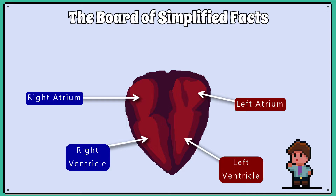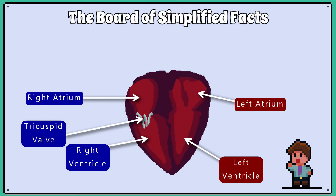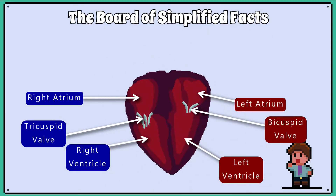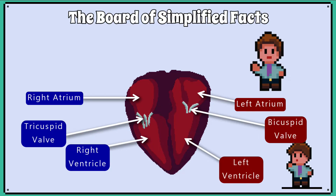Between the right atrium and right ventricle is the tricuspid valve, which has three flaps. Between the left atrium and the left ventricle is the bicuspid valve, which has two flaps. A good way to remember which side the valves are on is: it is right to tri — tricuspid — and left behind — so bi — bicuspid.